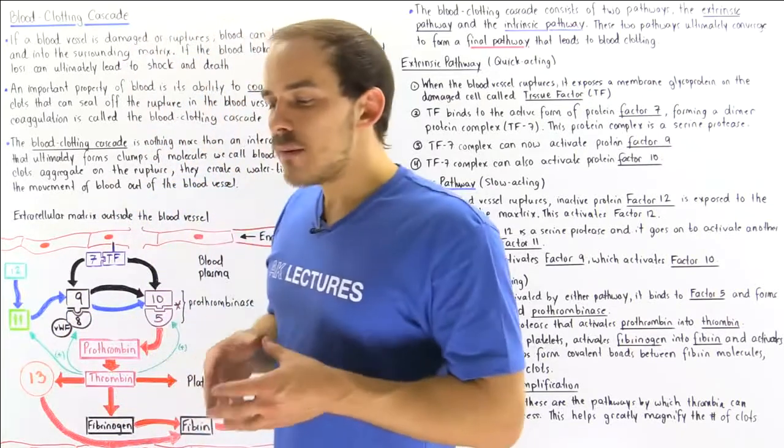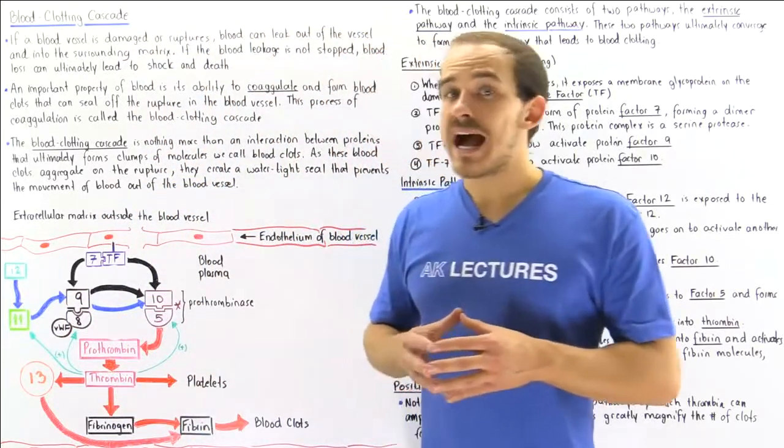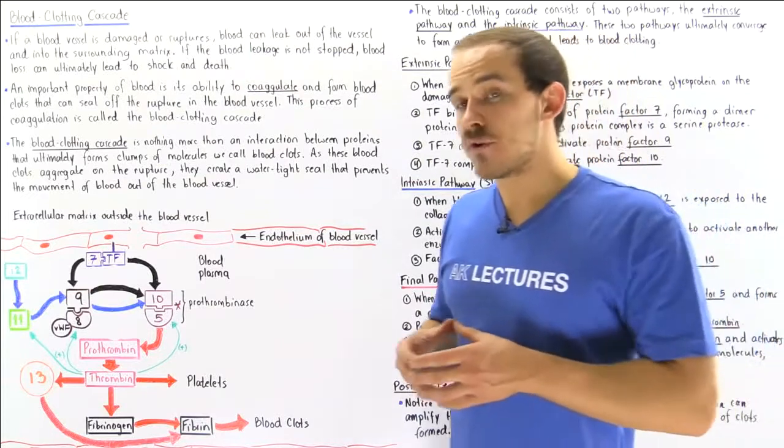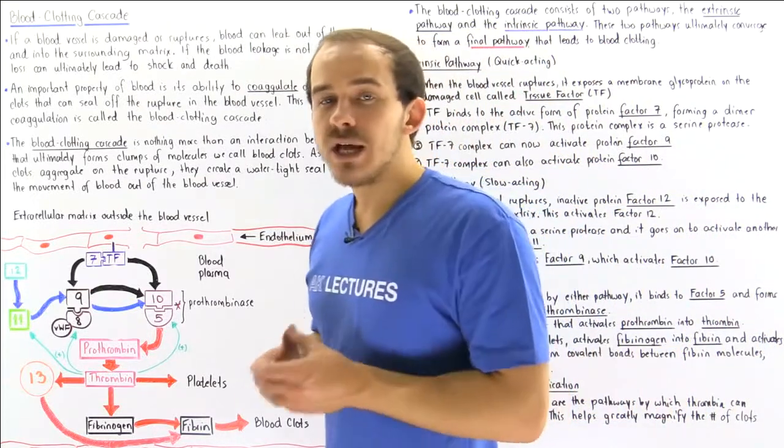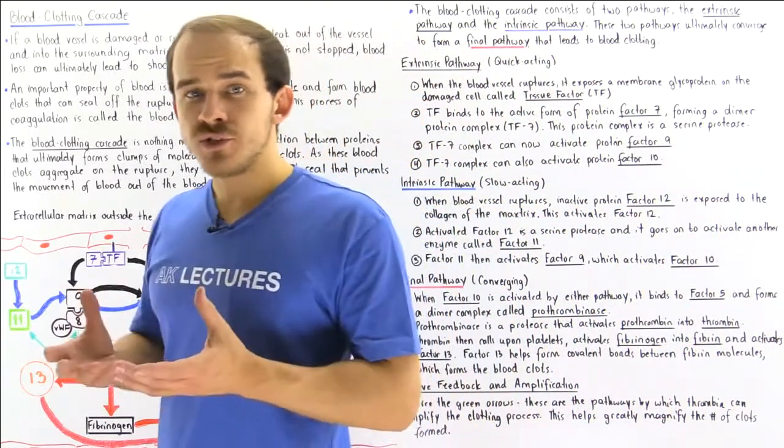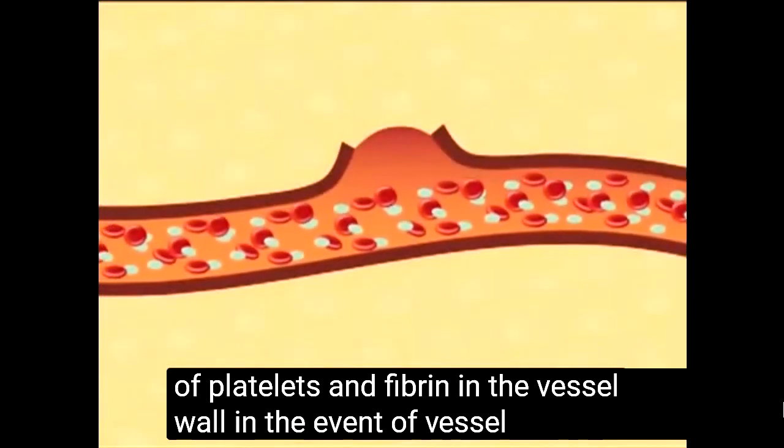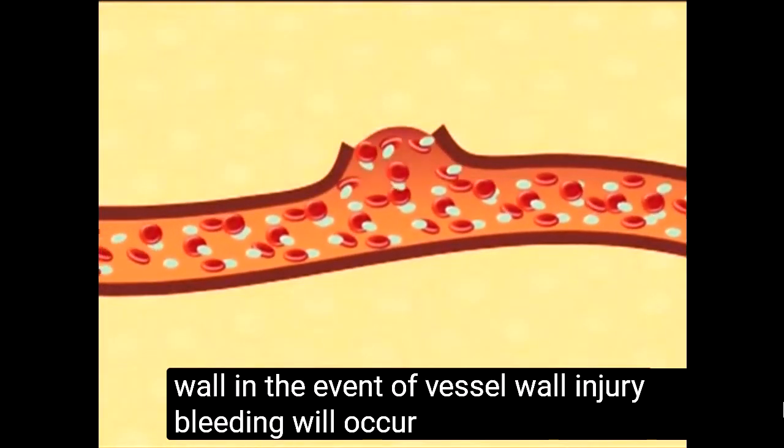When a blood vessel ruptures, blood will begin to move from high pressure to low pressure, from the inside of the blood vessel to the outside surrounding tissue. In the event of vessel wall injury, bleeding will occur.